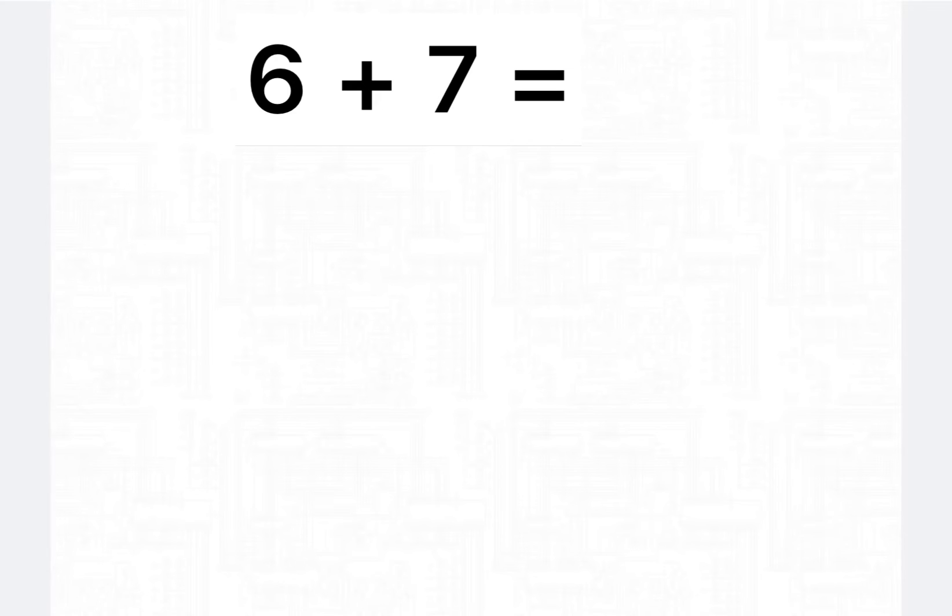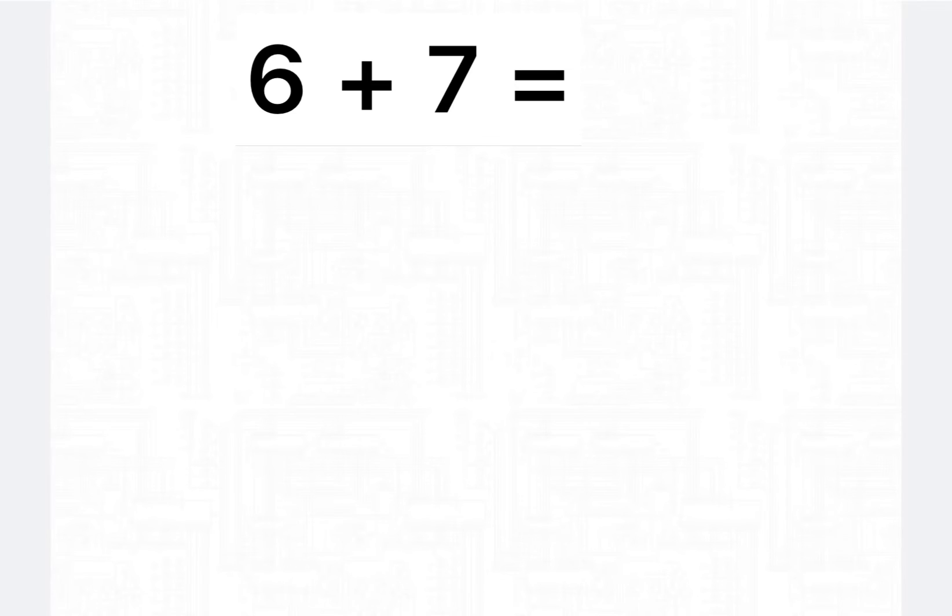Let's try this one. 6 plus 7. Which number is the bigger number? 7. So that means we have to put 6 on our hands. Let's count on from 7. 8, 9, 10, 11, 12, 13. 6 plus 7 is 13.